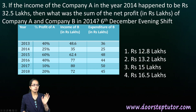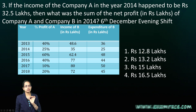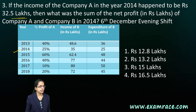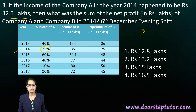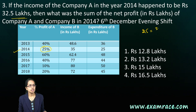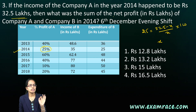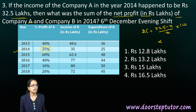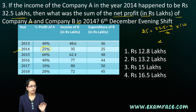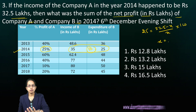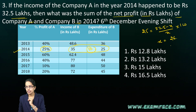The next question says: if the income of company A in 2014 was 32.5 lakhs, for 2014 the profit percentage is already known as 25%. So 25 = (32.5 minus expenditure) divided by expenditure into 100. We find the expenditure. The question asks for the sum of net profit for company A and B. For company B, net profit is 35 minus 25, which is 10 lakhs.